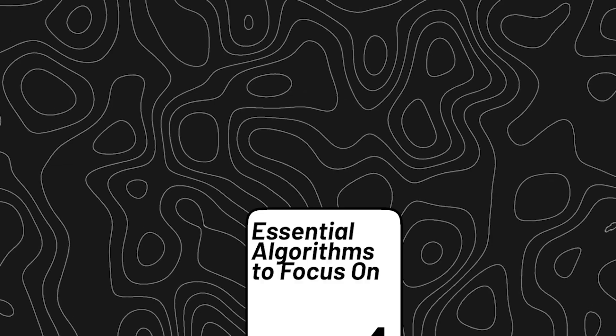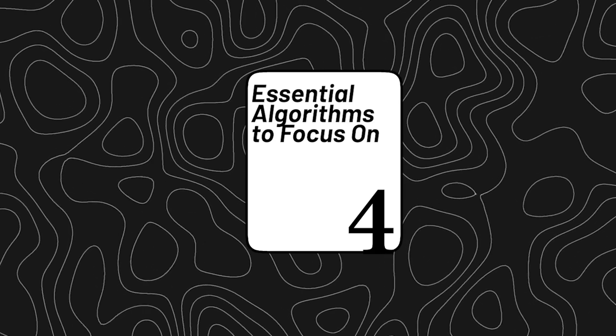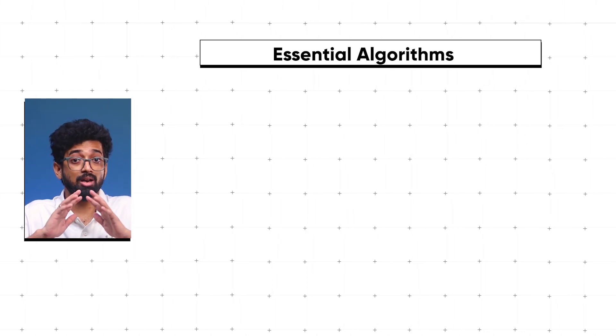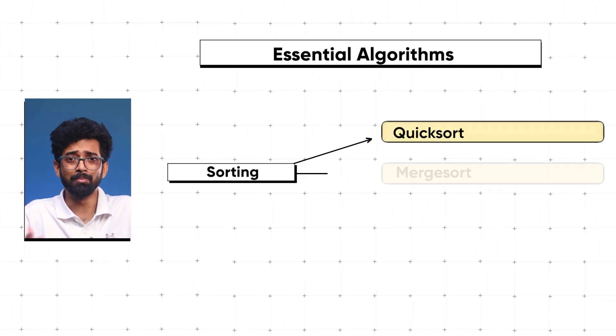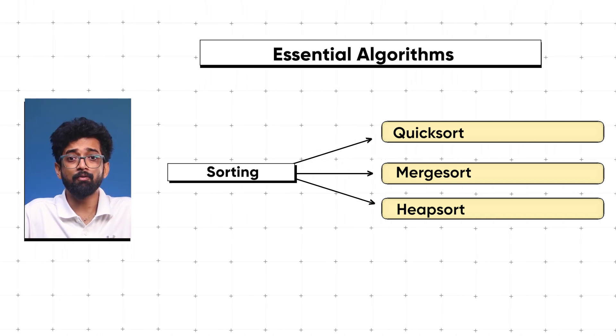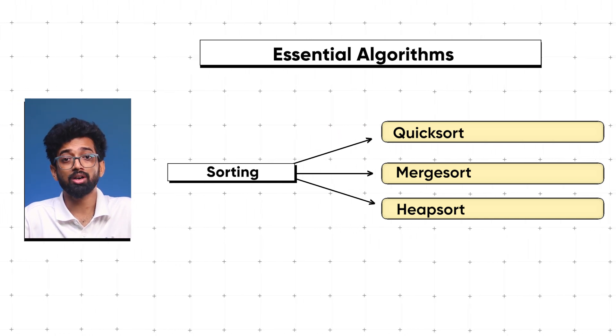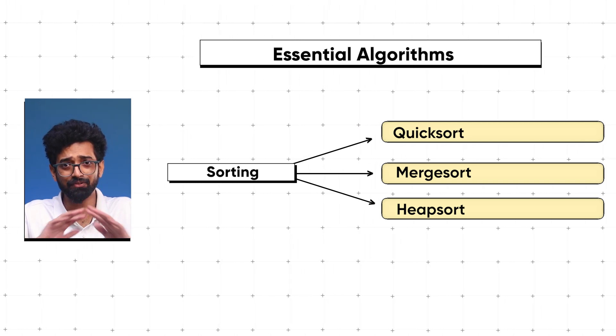Now that you have your data structures, it's time to know the algorithms. Essential algorithms to focus on: sorting algorithms — practice with Quick Sort, Merge Sort, and Heap Sort. Knowing when and how to use each sorting method will help you tackle different problems efficiently. Searching algorithms are crucial too — binary search is especially useful for finding elements in a sorted array quickly.